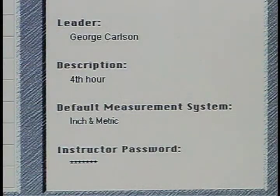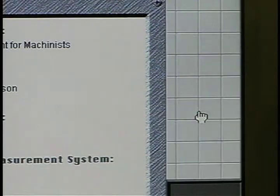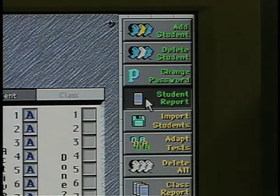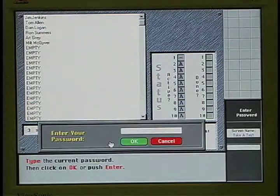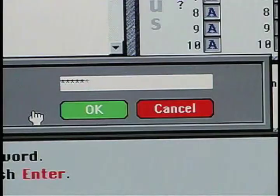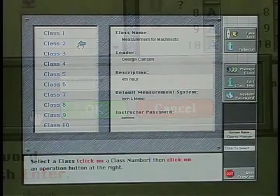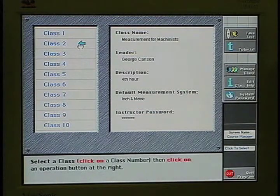Each leader will have a password assigned for each class. To begin, the leader clicks the Manage Class button and enters their password. They can then access the records of individuals as well as review a status report for the overall class. Each student within a class will have a password assigned by the instructor. They must enter their password to have access to their tests. The instructor controls which tests and which questions within a test will appear for their class.